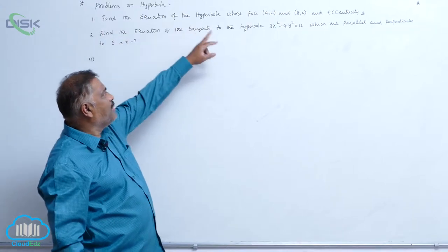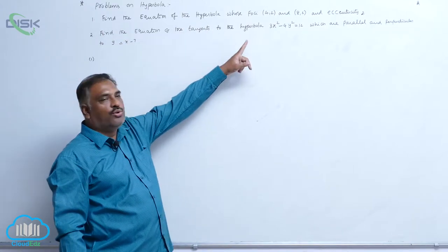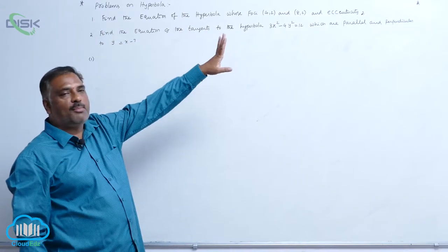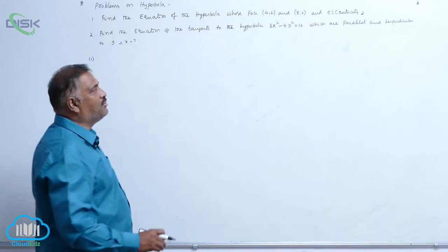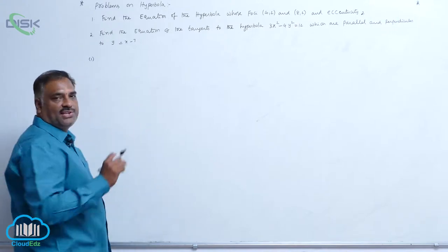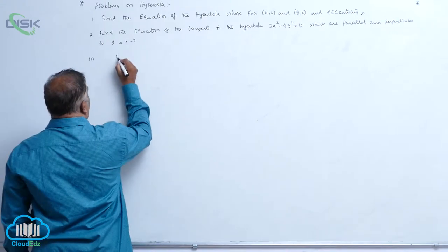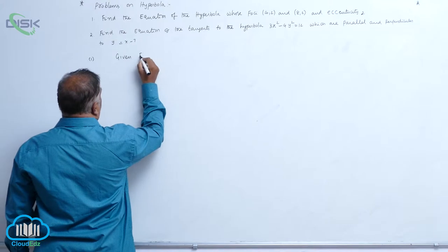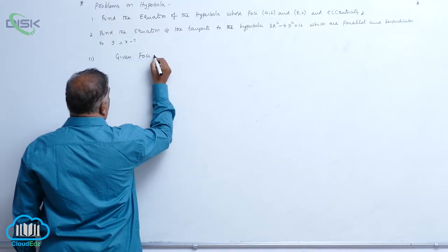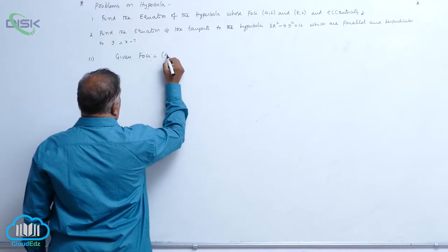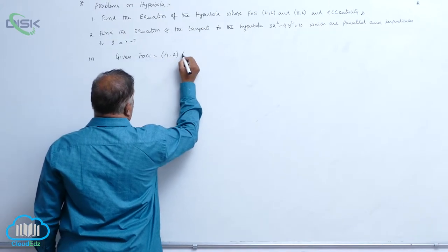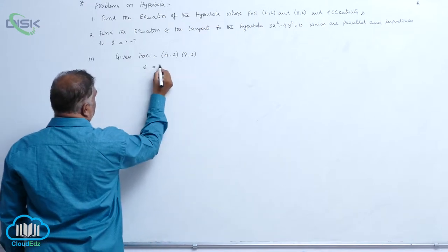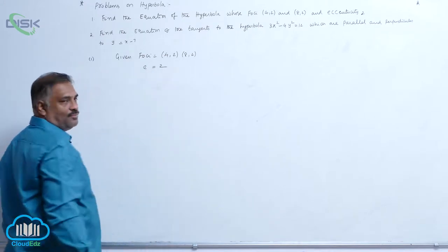Find the equation of the hyperbola whose foci are (4, 2) and (8, 2), and eccentricity is equal to 2.